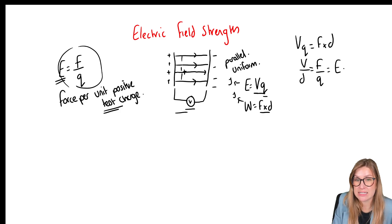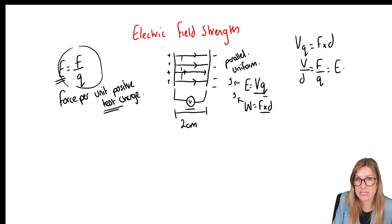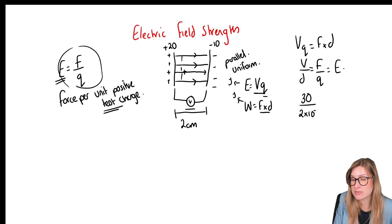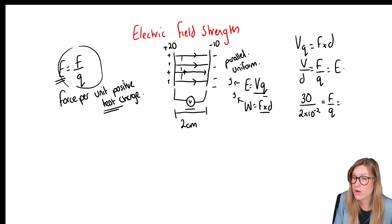For example, if the distance between the two plates is two centimetres, one plate has a charge of +20 and the other −10, the potential difference is 30. Dividing 30 by 2 × 10⁻² metres gives us the electric field strength.